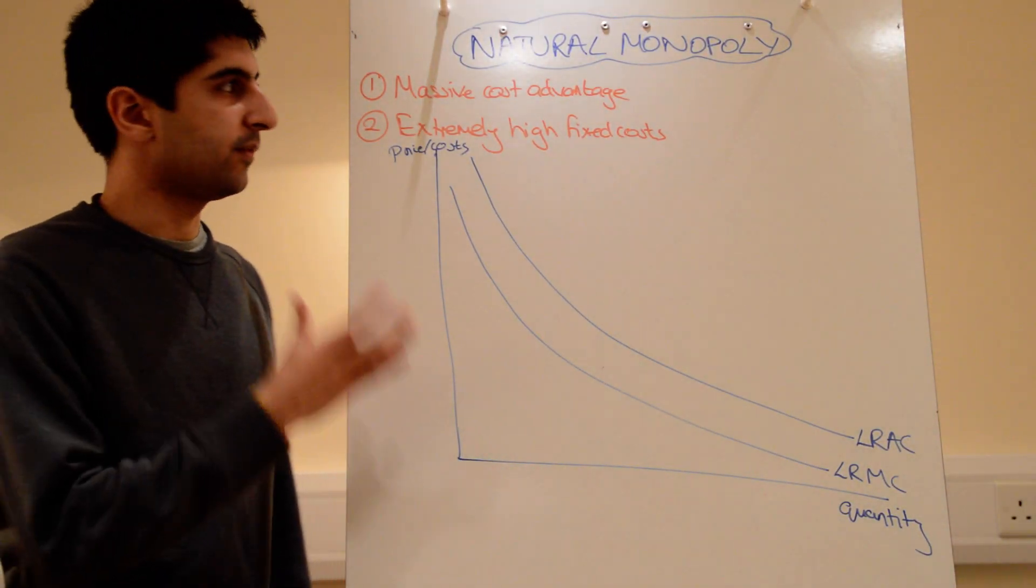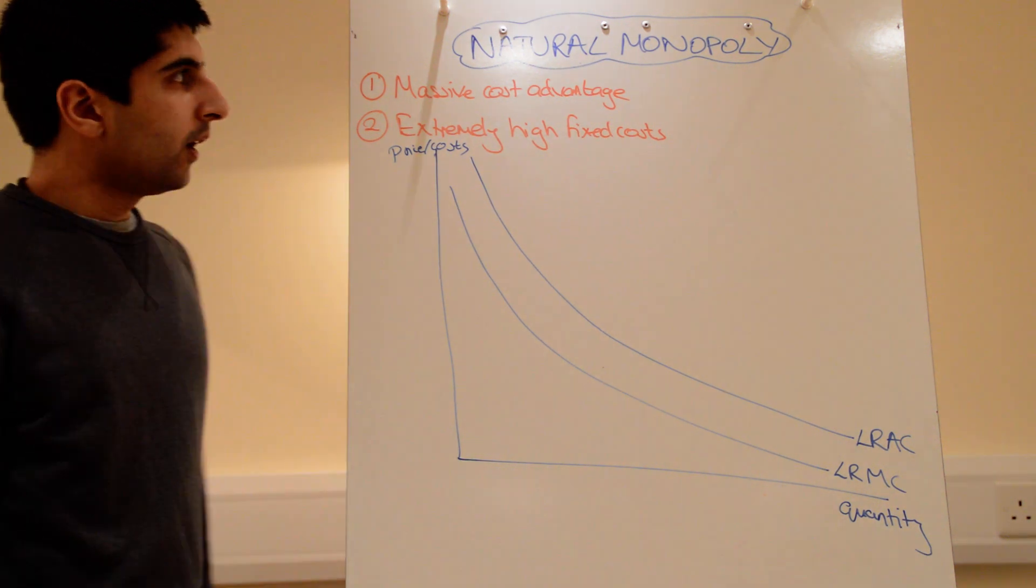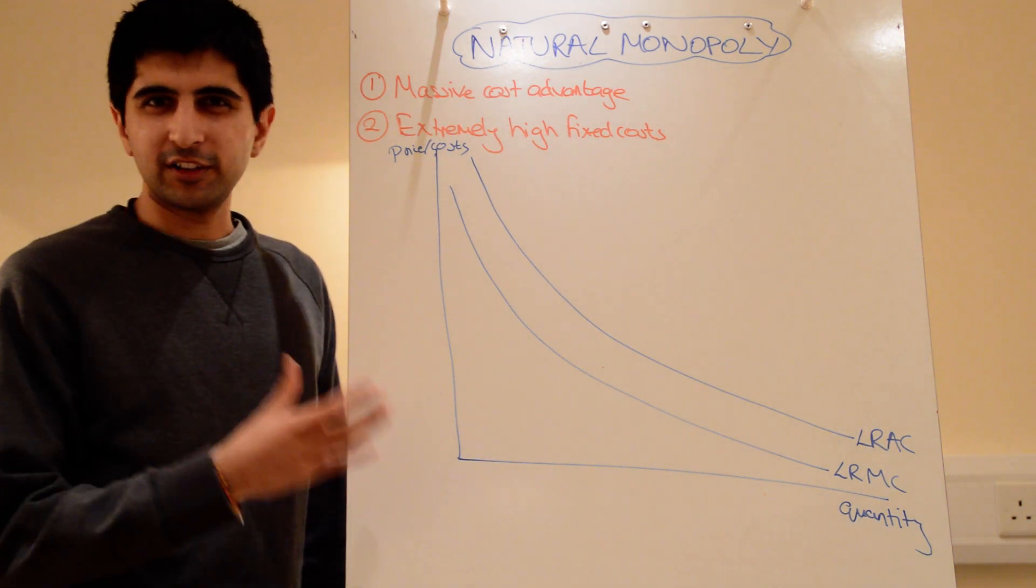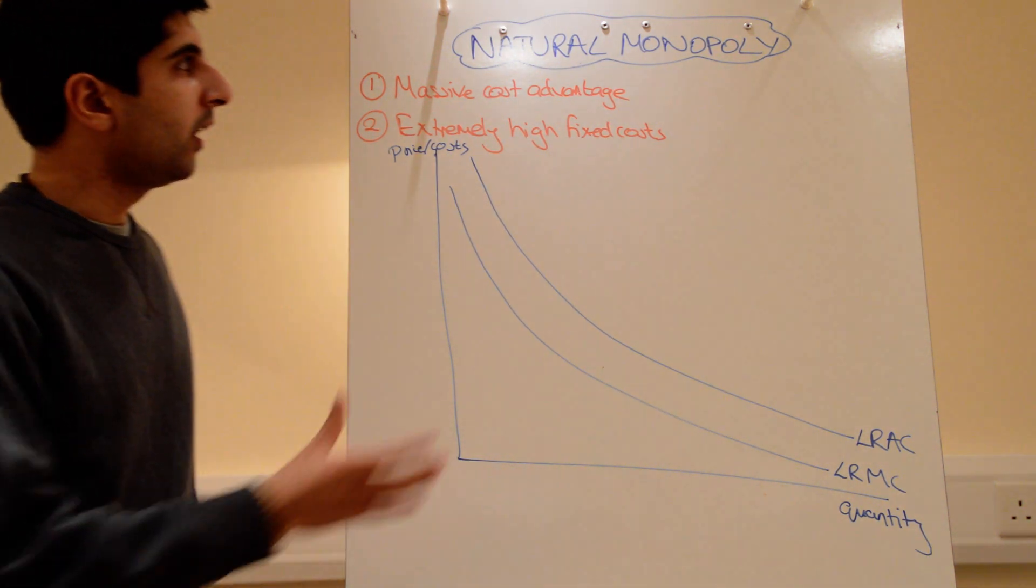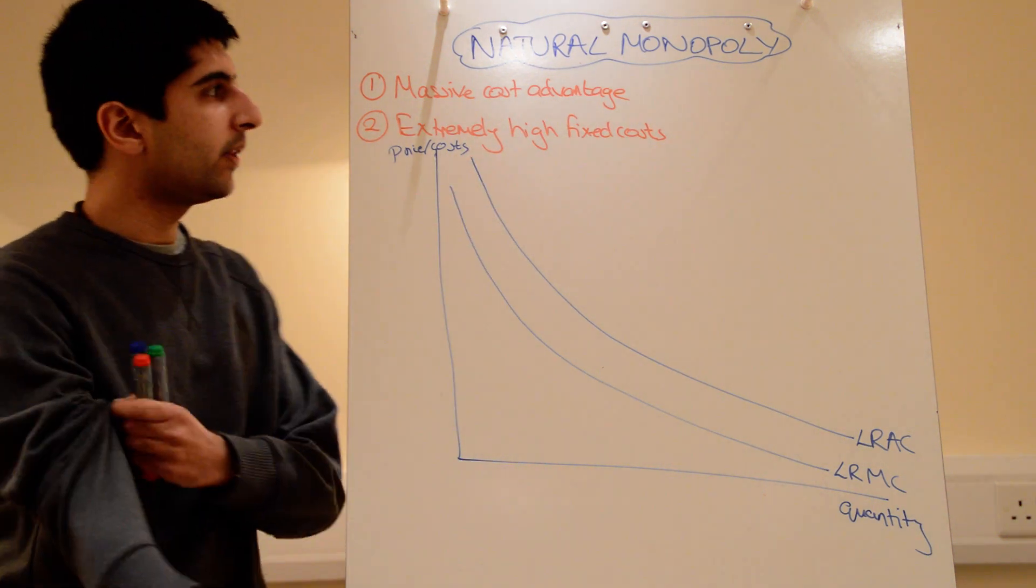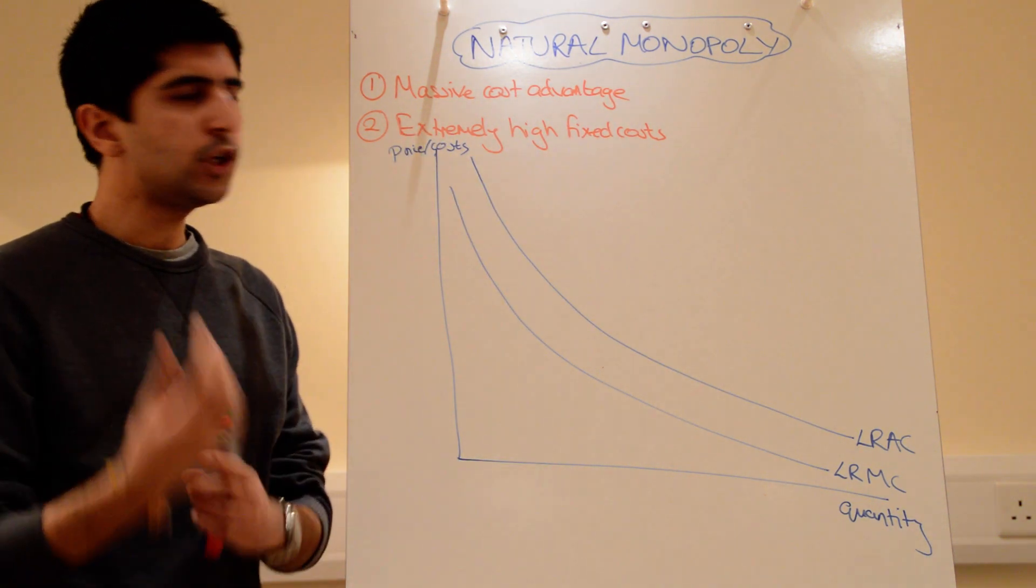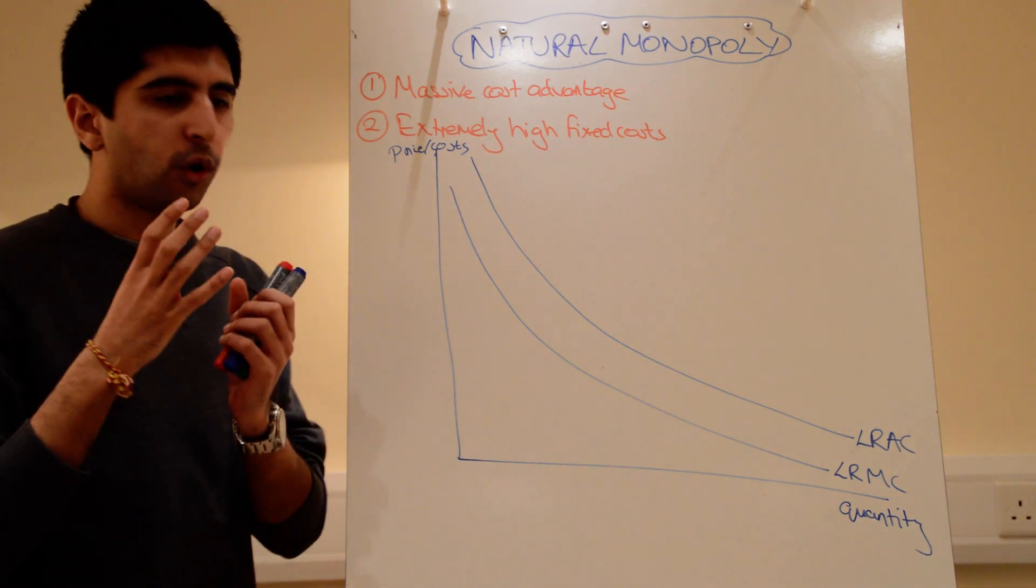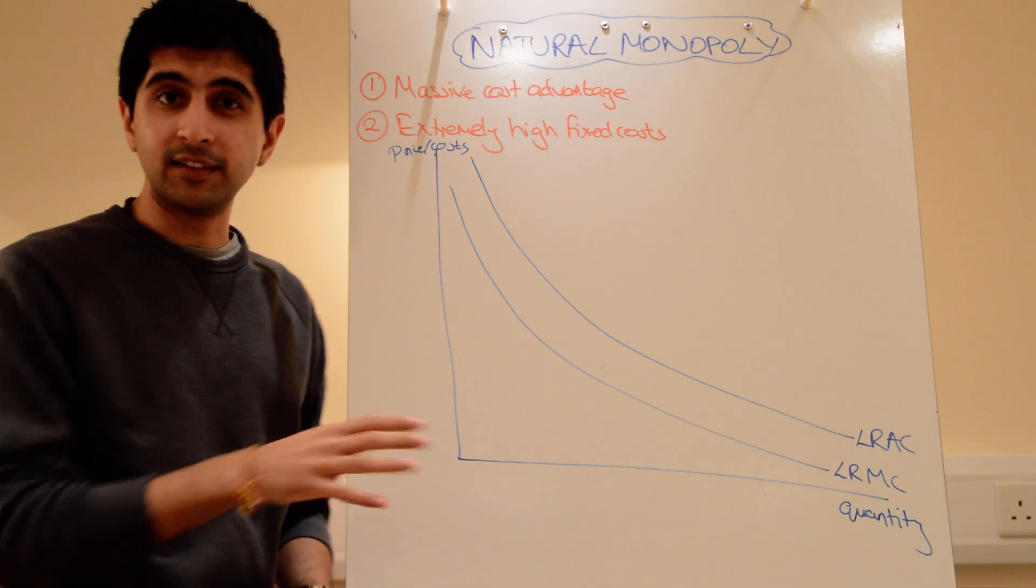Let's now look at quite a unique case of natural monopoly. This throws a lot of students, but actually it's a very simple concept. A natural monopoly is very simply when there is a massive cost advantage, a huge cost advantage, for the first firm that manages to enter the market.